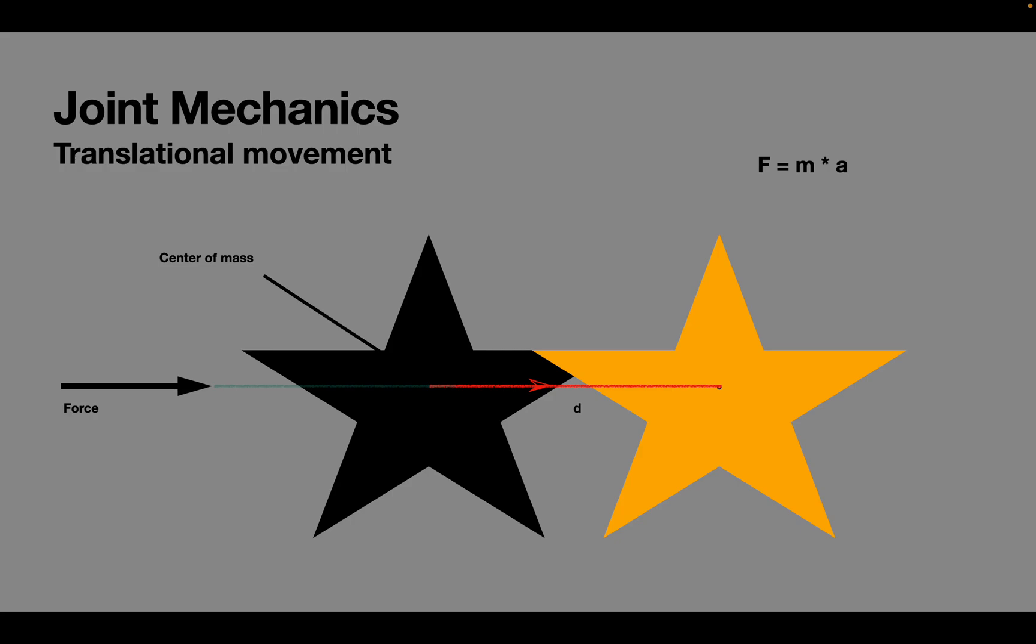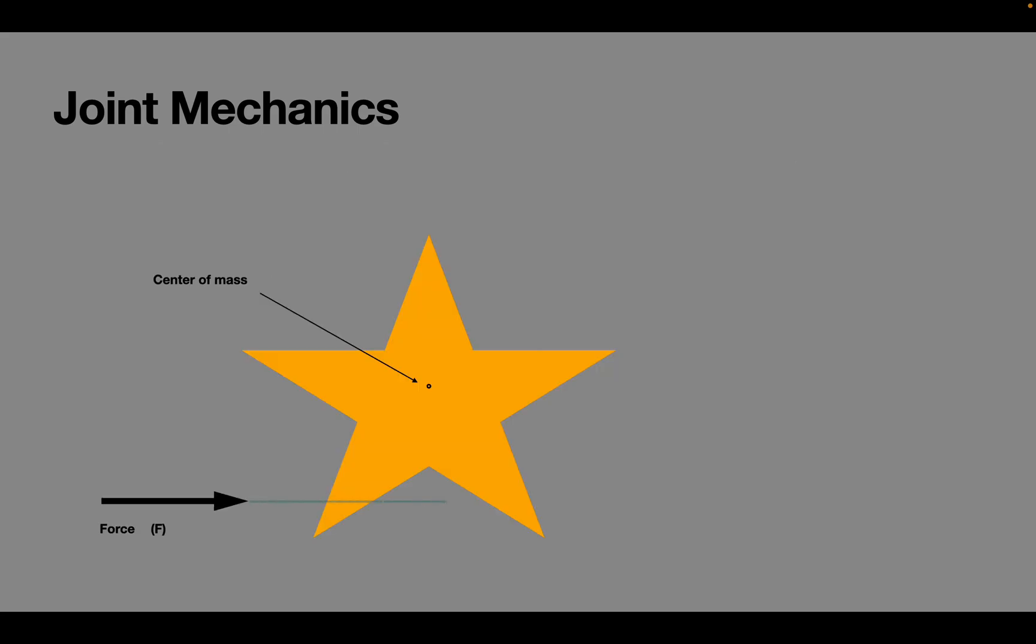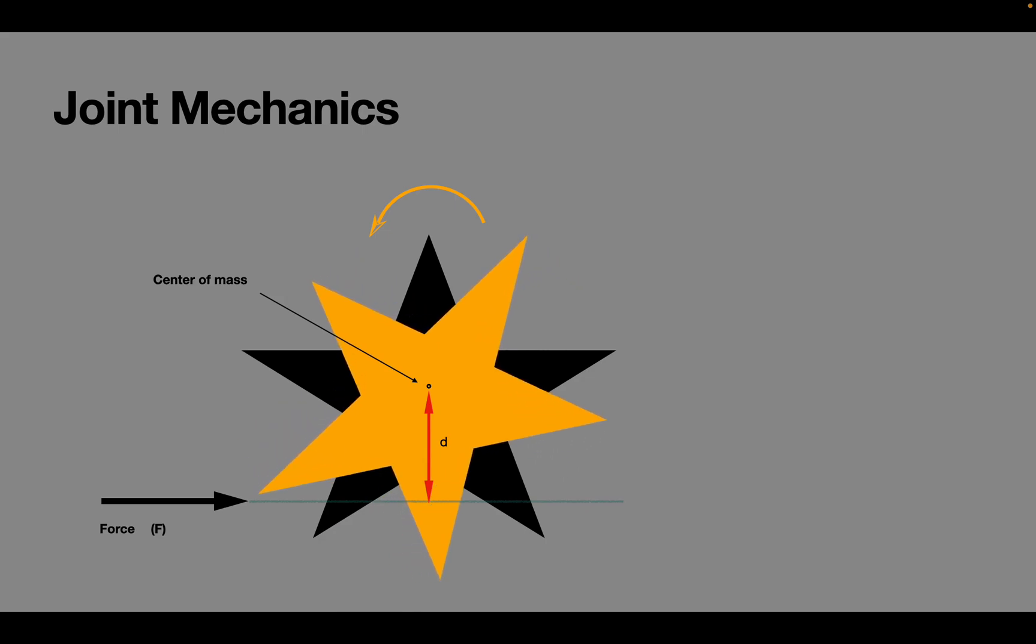However, if the force acts on a body at some distance D from the center of mass, then it produces a rotational motion. Note that the force is now magnified into moment of force, which is obtained by multiplying force and its perpendicular distance from the center of mass. Moment of force is one way to produce torque or a rotational force.